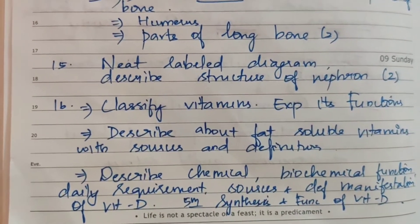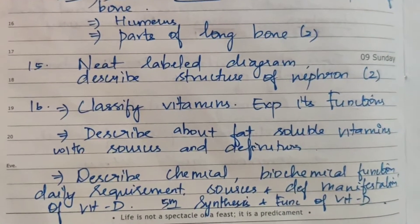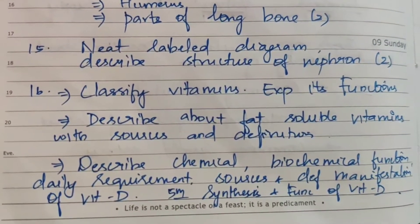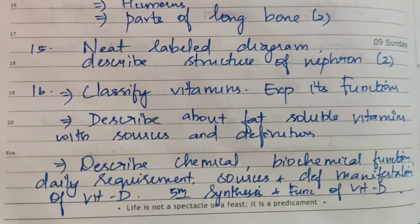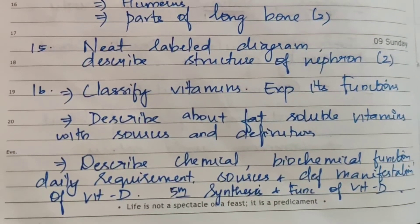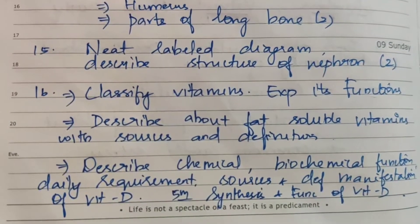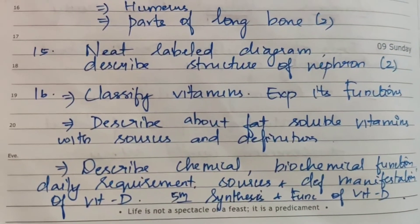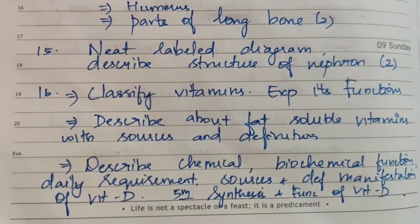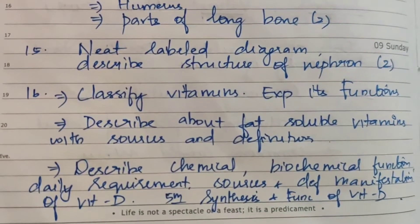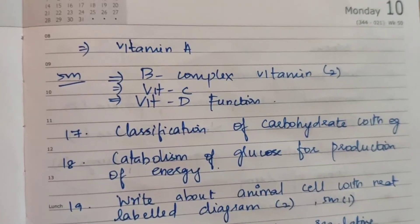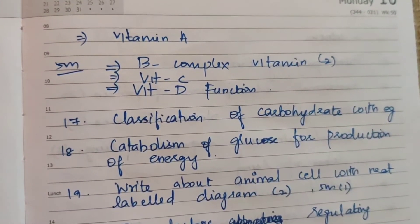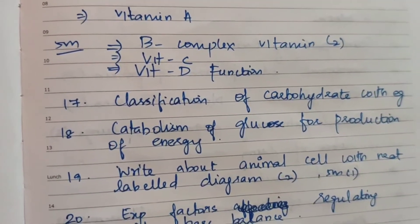Vitamins: classify vitamins and explain their functions. Describe fat-soluble vitamins with sources. Describe the chemical and biochemical function, daily requirement, sources, and deficiency manifestation of Vitamin D. Synthesis and function of Vitamin D also appear. Vitamin A is a 15-mark topic; Vitamin D, Vitamin B complex (2 times), and Vitamin C function appear as 5-mark topics.